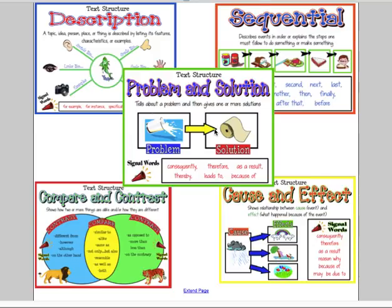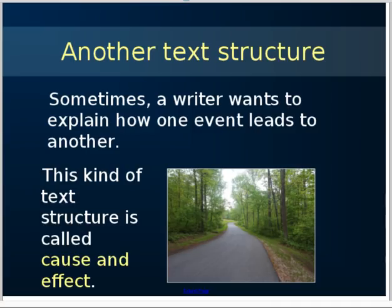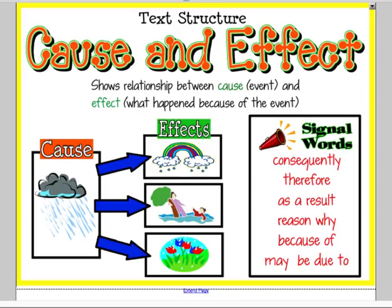Then later this week, you'll learn about the problem and solution text structure, our last of the five. Sometimes a writer wants to explain how one event leads to another. This kind of text structure is called cause and effect. The cause and effect text structure shows the relationship between a cause, which is an event, and an effect, what happened because of the event.